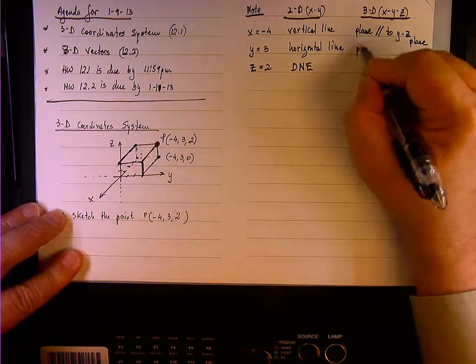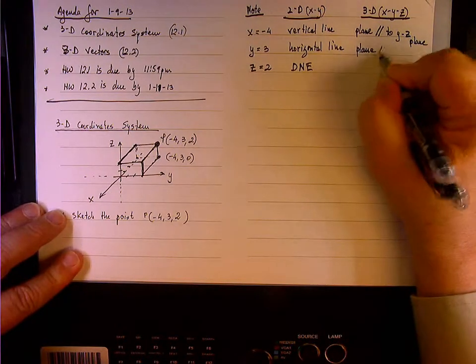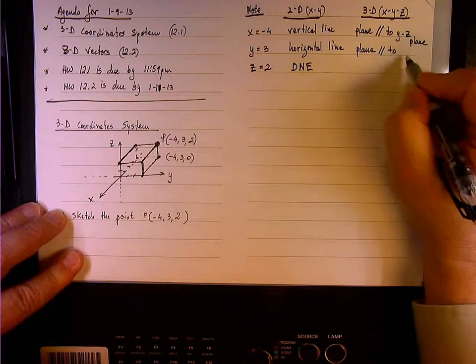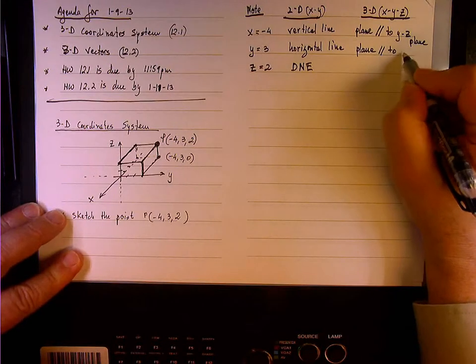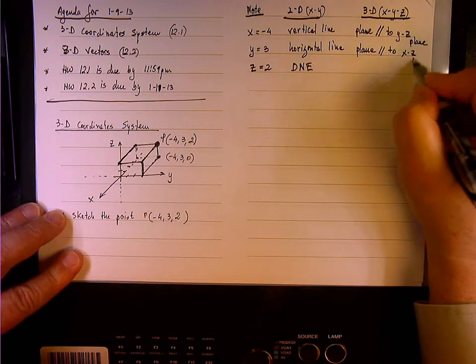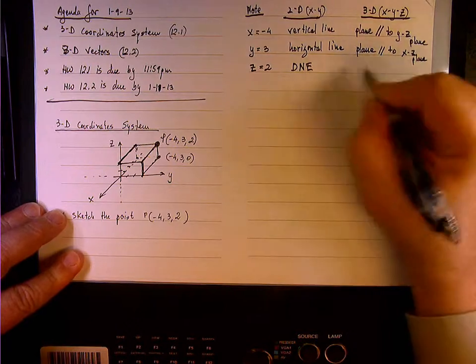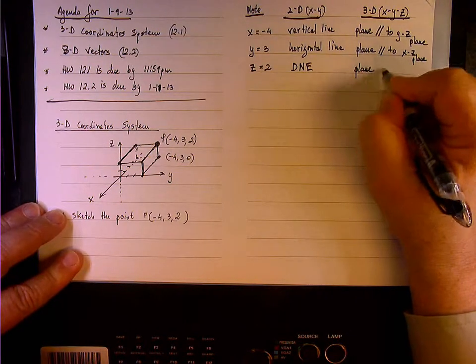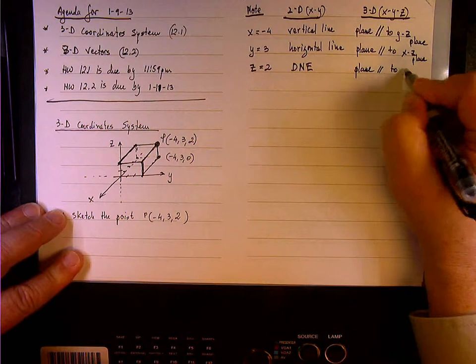y equals 3 is another plane that is parallel to the, what plane? xz. And of course, z equals 2 is a plane parallel to the xy plane.